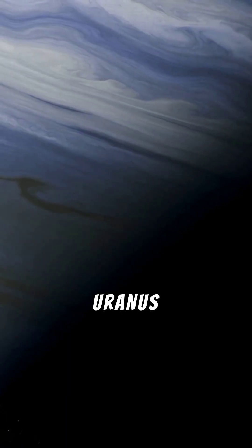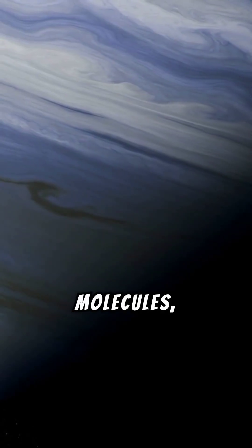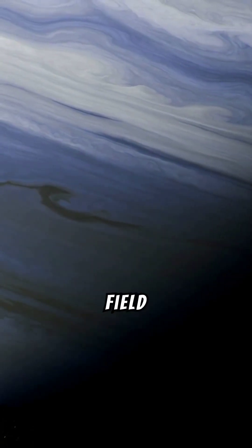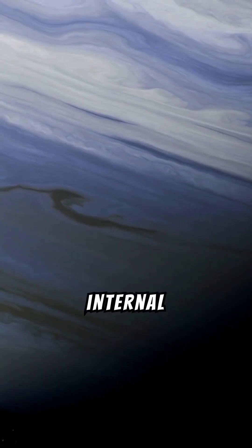As an ice giant, Uranus is rich in ice-forming molecules, and its complex tilted magnetic field adds another layer of intrigue to its internal structure.